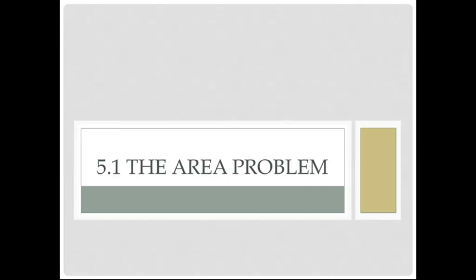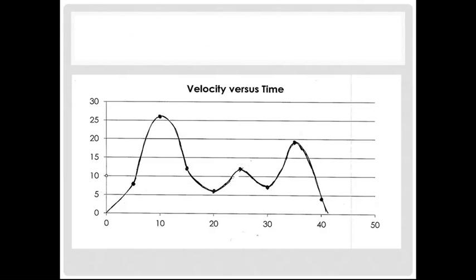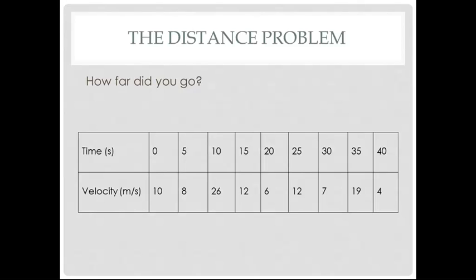The second part of calculus doesn't deal with the slope problem. It deals with what's called the area problem. How do you find, for example, the area under a graph like this? It's a very variable graph. This particular graph was generated by me just coming up with some numbers.